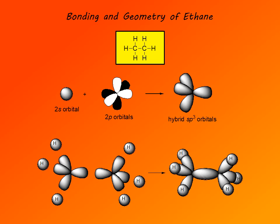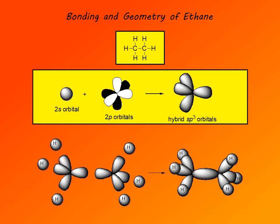Here is the Lewis structure of ethane; its molecular formula is C2H6. Since this is an alkane, carbon is sp3 hybridized. Here is yet another way to show hybridization of a carbon atom: the 2s orbital hybridizes with three of the 2p orbitals. Here the three 2p orbitals on the carbon atom are shown, each with its two lobes.